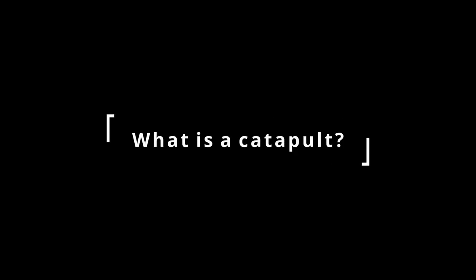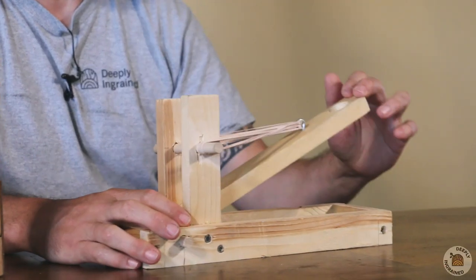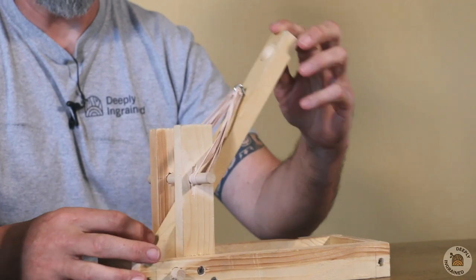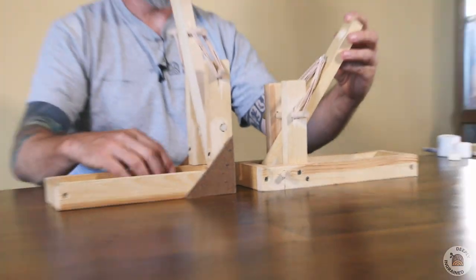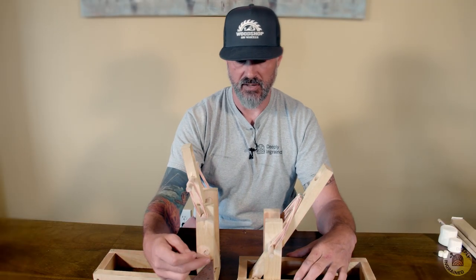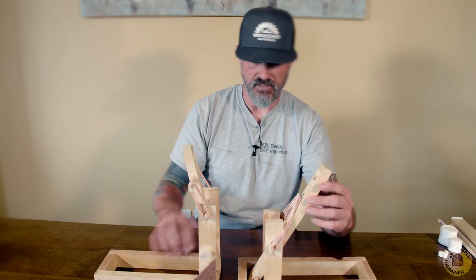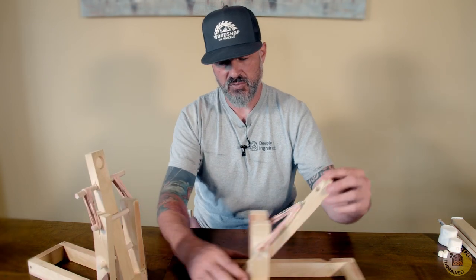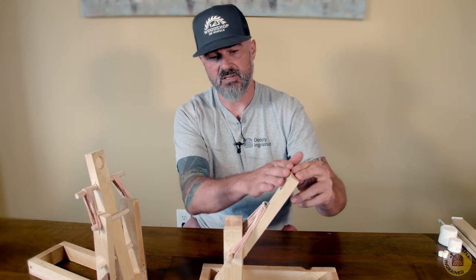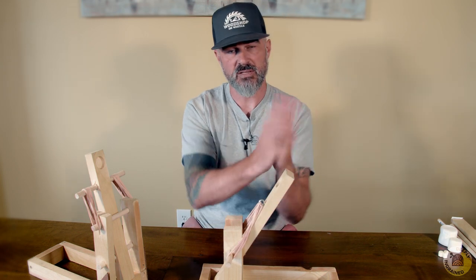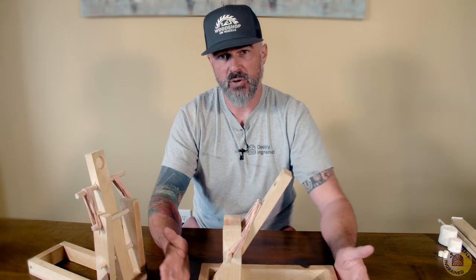First, let's talk about how catapults work. I already called this a lever — that's what it is — and the lever pivots on what is called the fulcrum or pivot point. You can see we've got two examples here: on one, the lever is pivoting up here near the top; on the other, the lever is pivoting all the way down at the very end. So where you put the fulcrum is one of your first variables. If the fulcrum is up here, you've got a much shorter lever; if it's down here, you've got a longer lever. There are pros and cons to both.